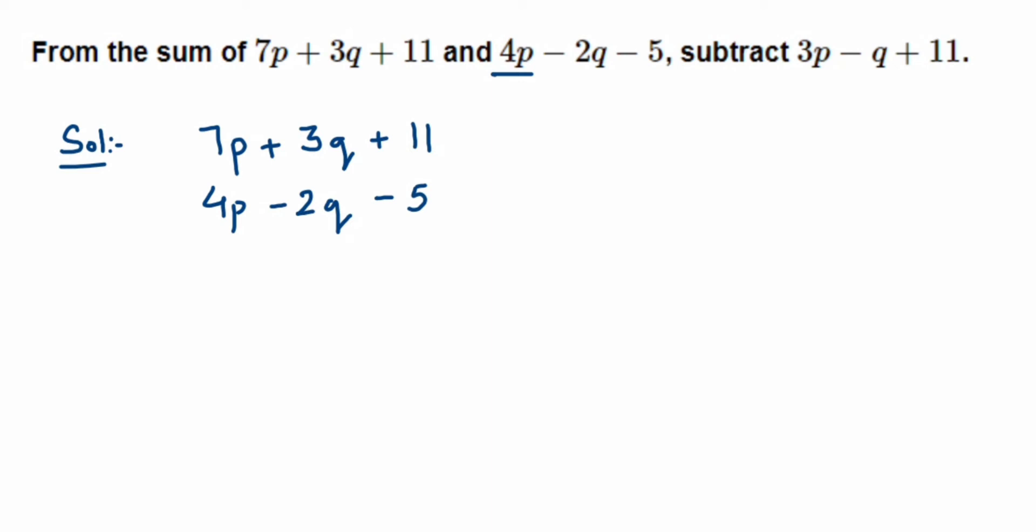Now we have to add them. So when we add this, 7 + 4 is 11, we'll get 11p. Now +3 - 2 is 1 with a positive sign because 3 is greater, we'll get 1q or you can just simply write q. And then 11 - 5 is 6, so we'll get +6.